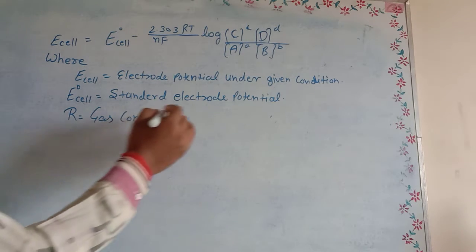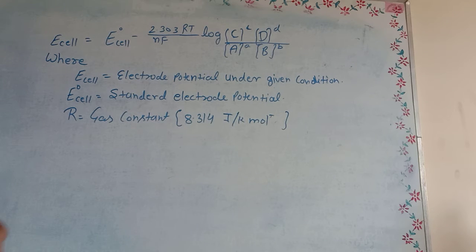R is equal to the gas constant, and its value is 8.314 Joule per Kelvin per mole. T is equal to temperature in Kelvin.